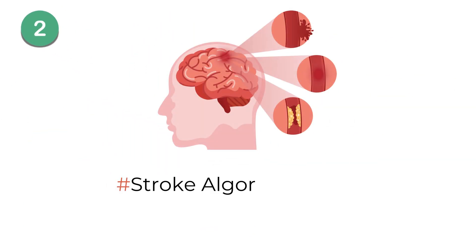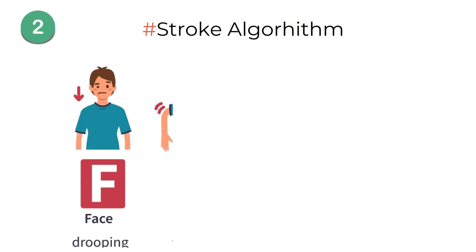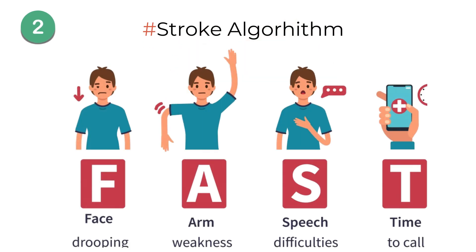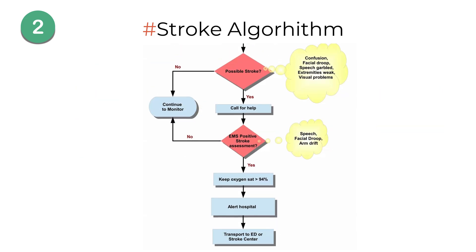Next, let's discuss the stroke algorithm. The FAST assessment — Face, Arms, Speech, Time — is a quick way to recognize a stroke. If you notice facial drooping, arm weakness, or speech difficulties, call for emergency help immediately. Then follow the acute ischemic stroke management protocol.